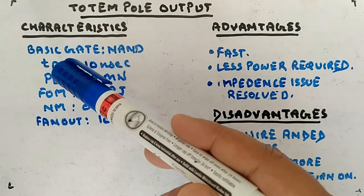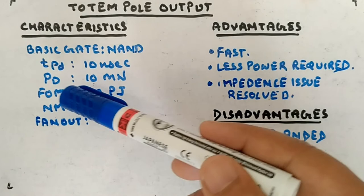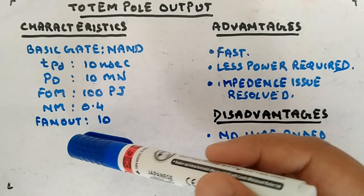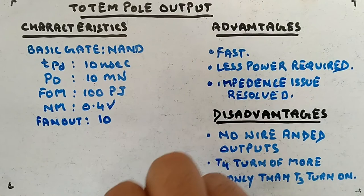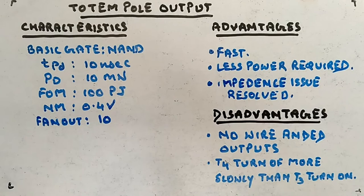The basic gate is NAND. The propagation delay is 10 nanoseconds and power dissipation is 10 milliwatts, giving a figure of merit (FOM) of 100 picojoules. The noise margin is around 0.4 volts and the fan-out is around 10. The advantages are that it is fast, less power consuming, and it resolves the two impedance issues we had before.